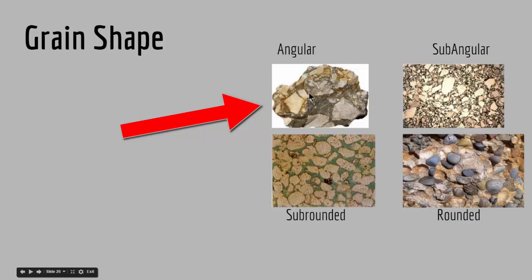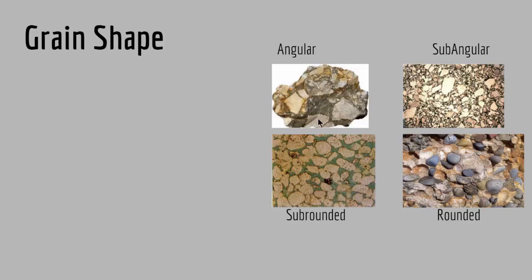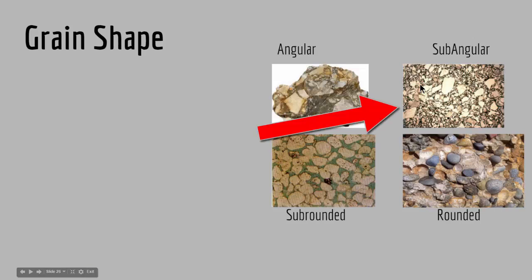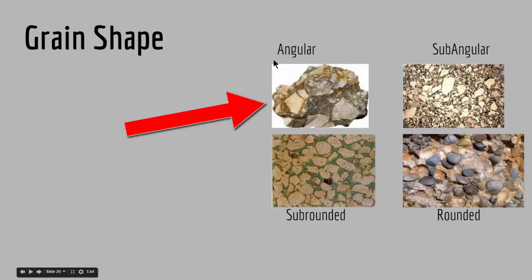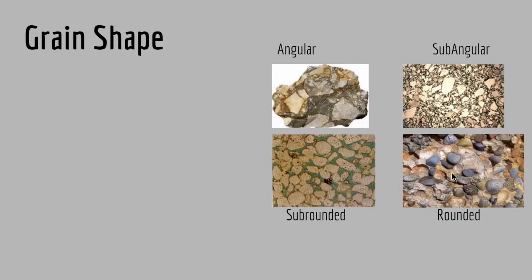Let me show you some live examples. We have this clastic rock — we see the grains have very sharp edges, they are angular. Therefore we conclude that the depositional environment where this rock was deposited is closer to the energy source. We also have subangular grains, which are somewhat rounder than angular grains, indicating the rock was deposited further from the source than angular rocks. Eventually we get rounded grains, which means the depositional environment was away from the source. Notably, angular grains in a clastic rock are usually poorly sorted, while rounded grains in a clastic rock are usually well sorted.